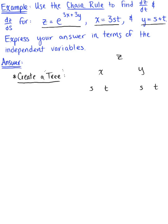We have all of our variables, and we know that in order to build the tree, we connect each variable with a line representing the partial derivatives. On the left branch: the partial derivative of z with respect to x, then the partial derivative of x with respect to s, and the partial derivative of x with respect to t. On the right branch: the partial derivative of z with respect to y, and the partial derivative of y with respect to s.